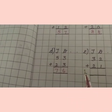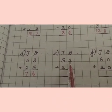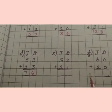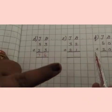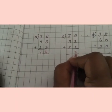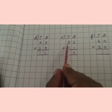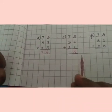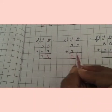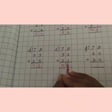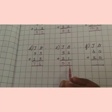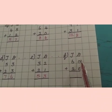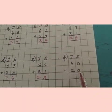53 plus 23 is equal to 76. Next one: 32 plus 21. Ones place: two in the mind, one in the finger — after two: three. Answer is three. Tens place: three in the mind, two in the finger — after three: four, five. Answer is five. 32 plus 21 is equal to 53.